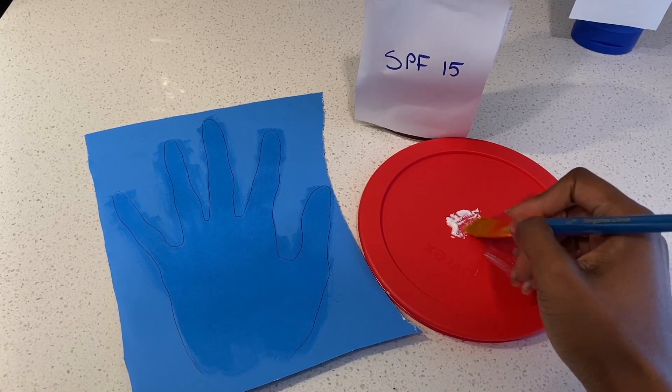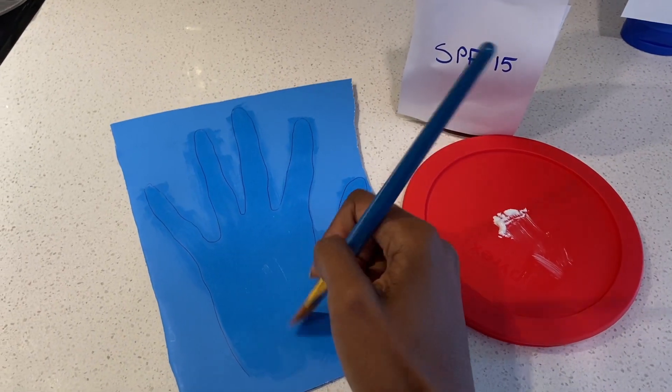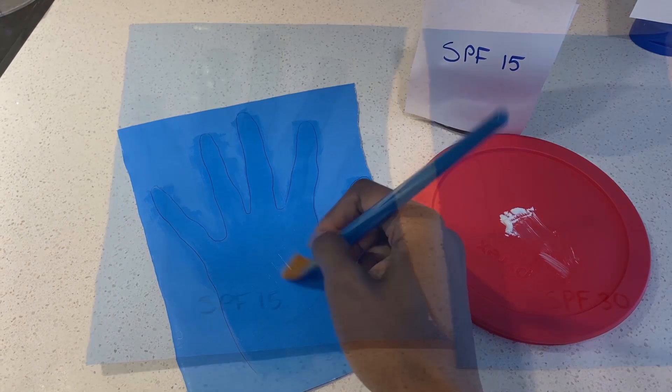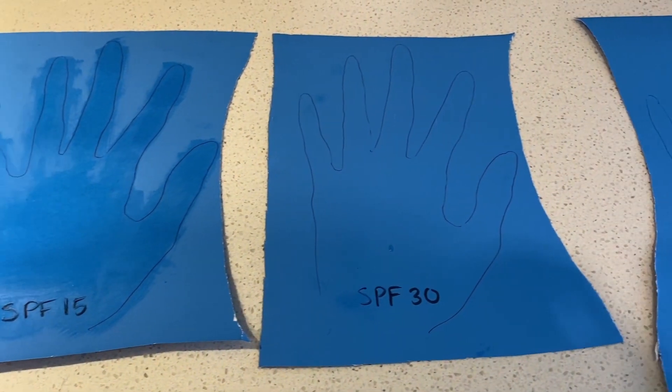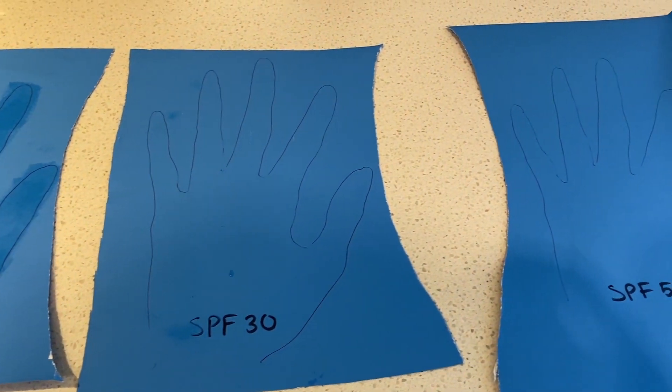We are going to repeat this procedure using higher SPFs. With your marker, write what SPF belongs to what piece of paper.